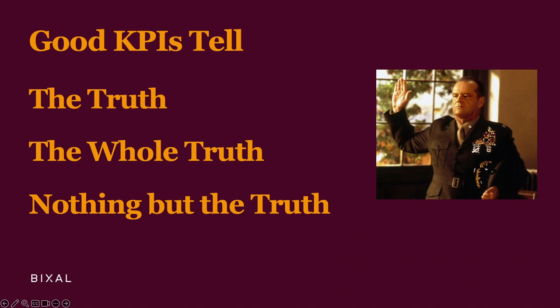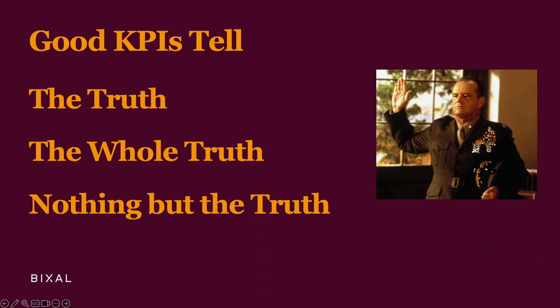Our work may seem small at times, but it affects the way people access healthcare, their retirement, their businesses, and their ability to vote. So it's important that through our KPIs we deliver the truth — our data is accurate and people can understand it easily. The whole truth — we include the good and the bad so we can learn and improve. And nothing but the truth — our KPIs should be relevant, leaving out anything that isn't aligned with our goals.